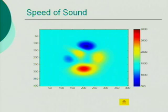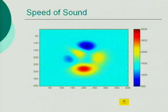This is just the projection of the previous picture on the xy plane. The x and y value represents the spatial location, and the different color represents different speed of sound.